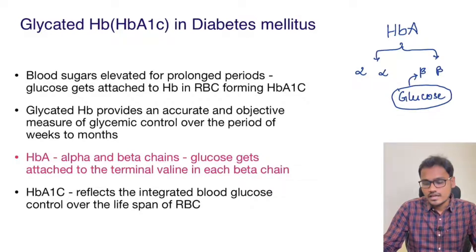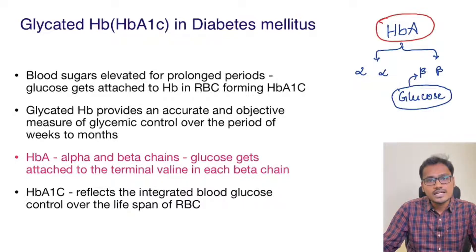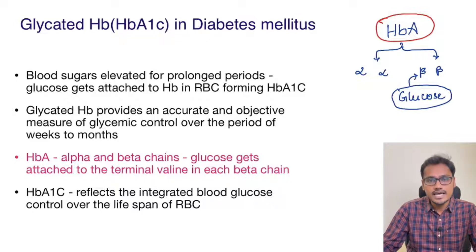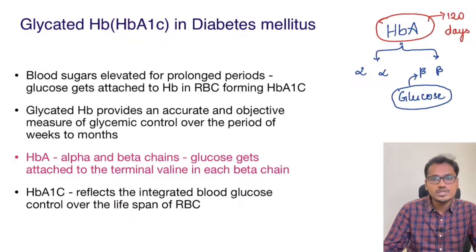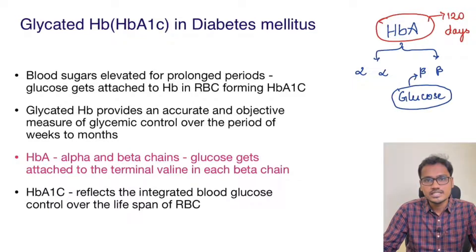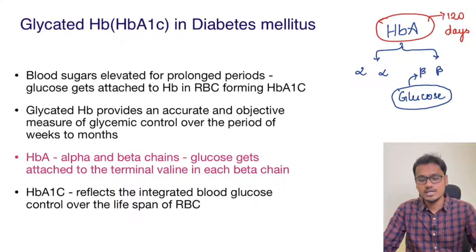This hemoglobin is usually present in the RBC. So whenever glucose is attaching to the beta chain of the hemoglobin, it will be present until the RBC dies, which is normally around 120 days. So glycated hemoglobin is present in the circulation for 120 days. If we evaluate the HbA1c level, it will give an approximate estimate of glucose level over the period of three months.